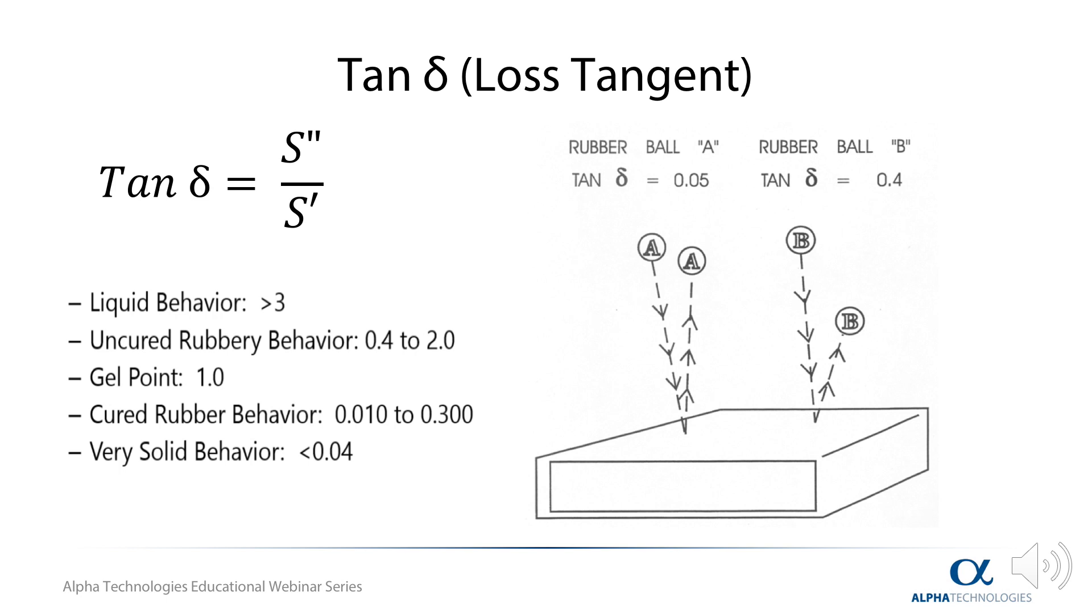Cured material B has a significantly higher tan delta, meaning the viscous response of this material will have a greater influence in comparison to material A, thus resulting in less rebound as more of the energy will be lost.